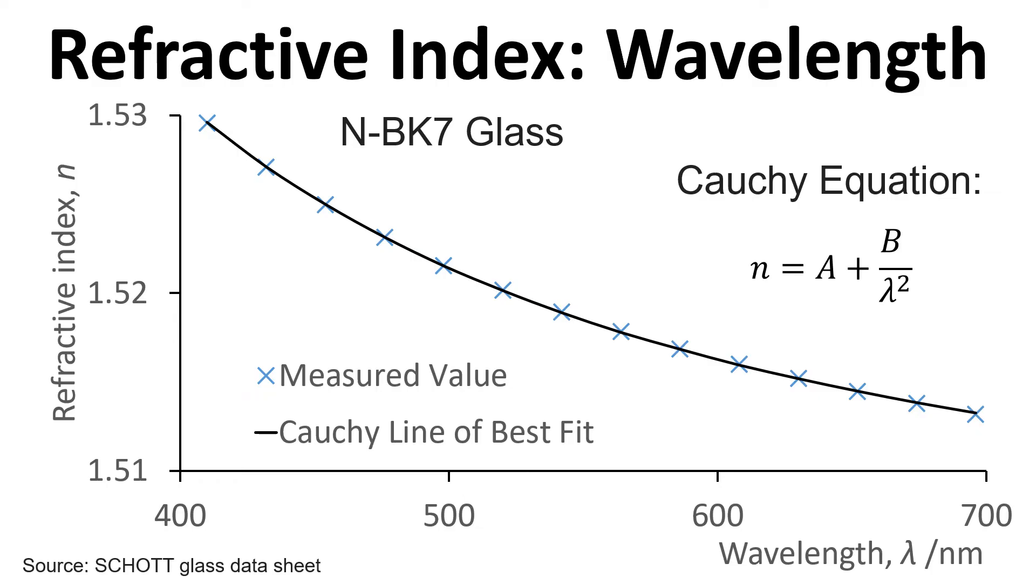In this particular case, over this wavelength range for this particular type of glass, we have a value of A that is 1.50458 and a value of B that is 4204.13.